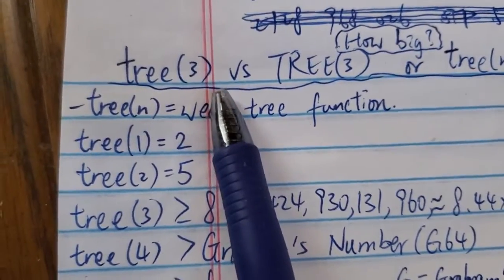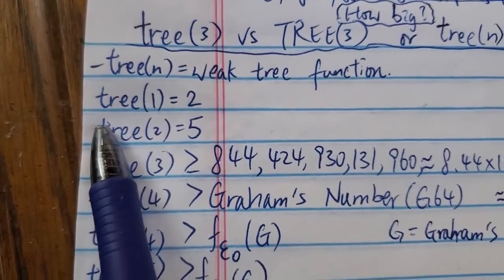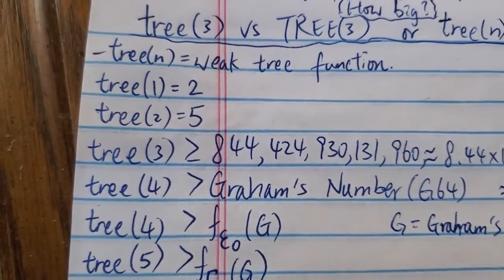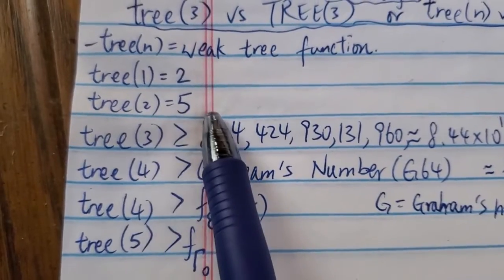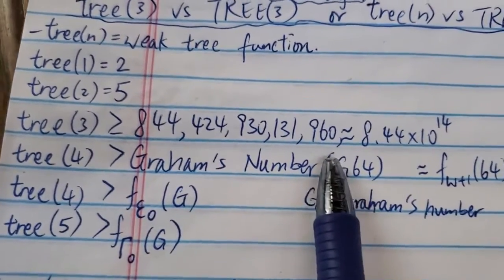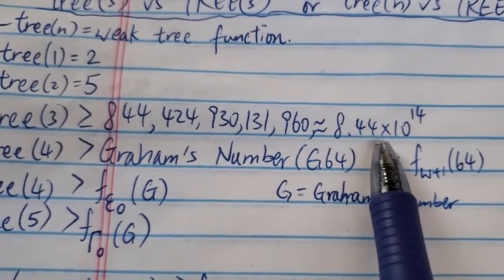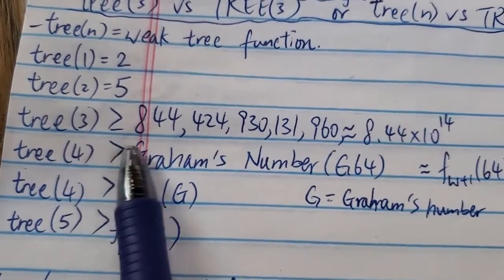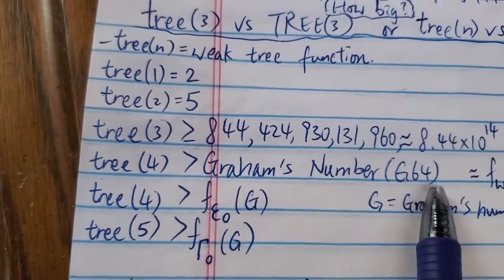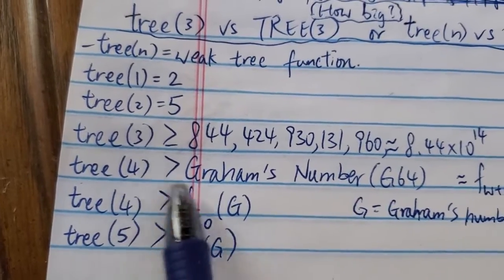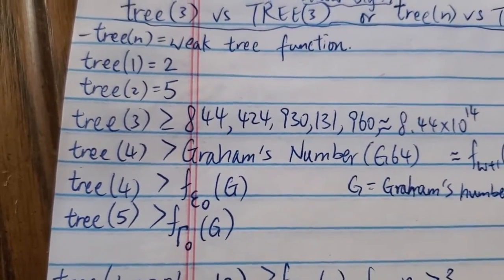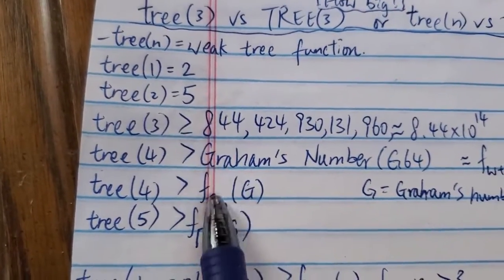So first, let's look at the weak 3-N (in small letters). 3-1 equals 2, and 3-2 equals 5 — there's a simple explanation on the wiki page for why. And 3-3 is at least around 8.44 times 10 to the 14 — already an astronomical number. As for 3-4, some people have proven that 3-4 is greater than Graham's number G64 — actually much, much bigger than that. Starting from 3-3, these are all lower bounds; 3-1 and 3-2 are exact.